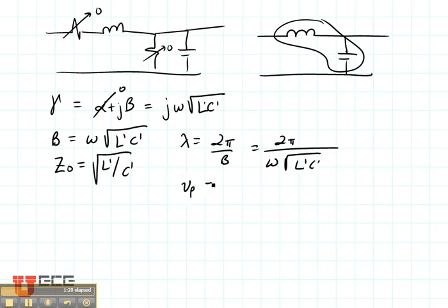The velocity of propagation is another factor that we need, and that is always omega divided by beta. For a lossless transmission line, it's one over the square root of LC.